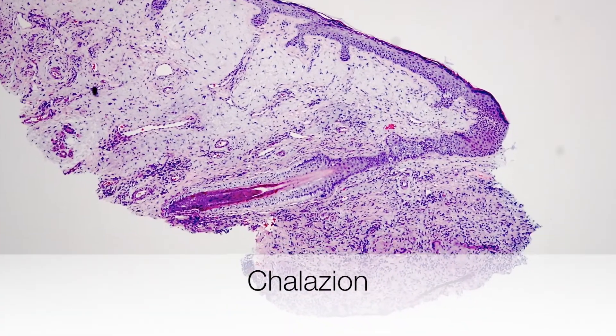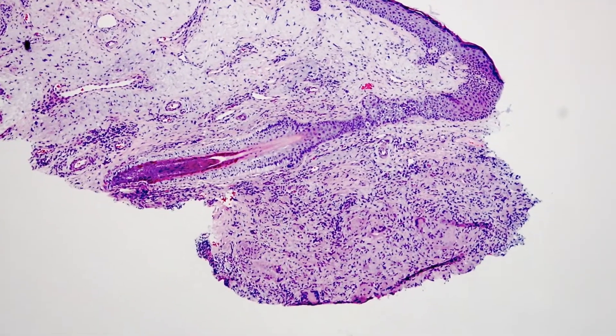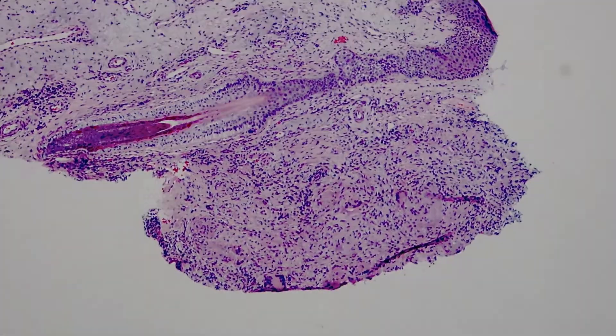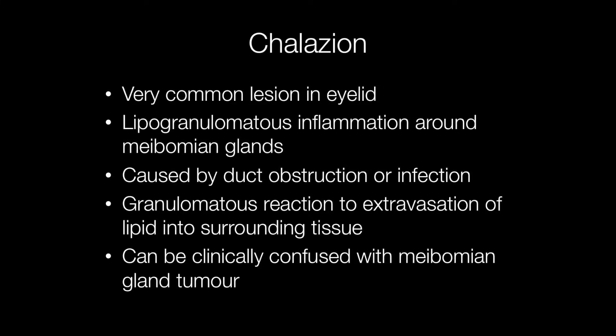This is a biopsy from an eyelid containing a chalazion. Chalazions are very common lesions that occur in the eyelid, and they arise as a result of a blockage or infection of the duct of a meibomian gland, resulting in extravasation of lipid into the surrounding tissue, and this causes a granulomatous inflammatory reaction.